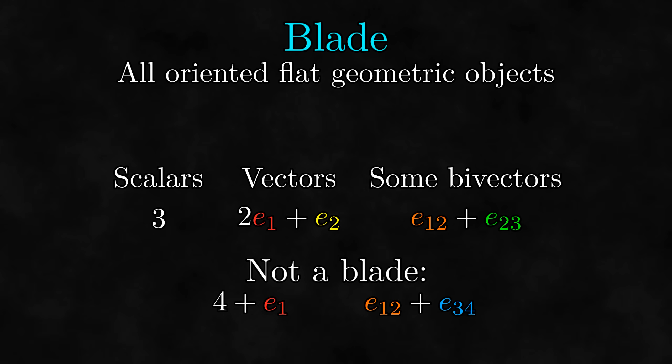If we want to talk about blades of a particular dimension, we will say things like one-blade for vectors and two-blades for bivectors. Now, I would like to make an exercise here asking you to determine if several different things are blades or not, but the issue is that it's actually quite difficult to determine in many cases.